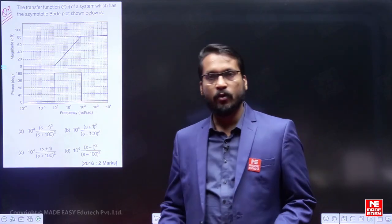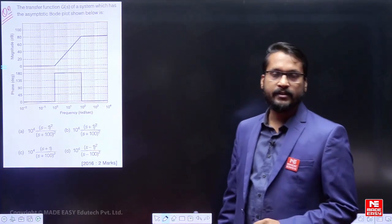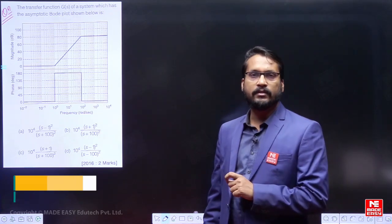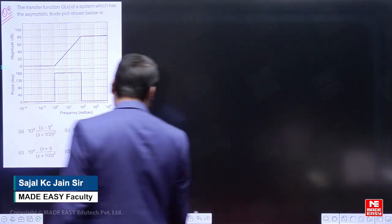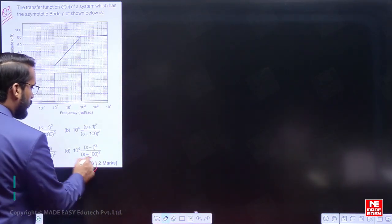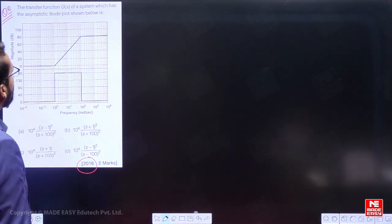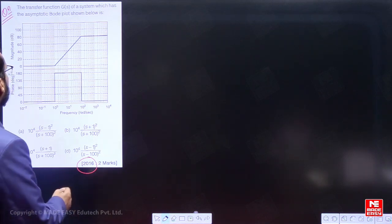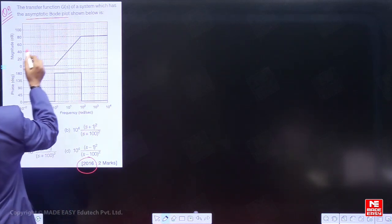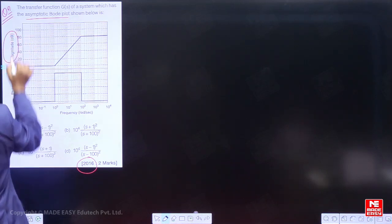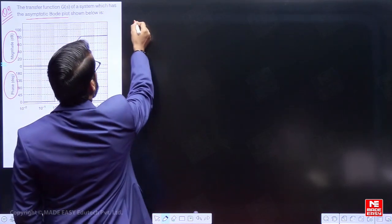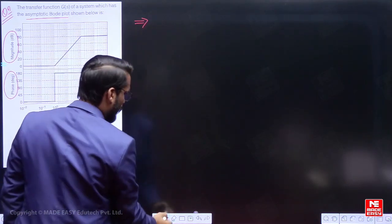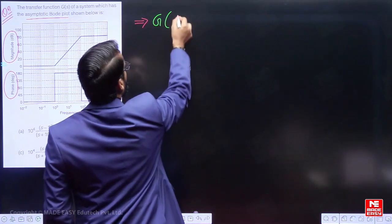Hello, dear students. I welcome you all in this series by Made Easy. Let us discuss the next previous year question which was asked in the year 2016. The transfer function G(s) of the system has the asymptotic Bode plot — the examiner has given the Bode magnitude plot and the phase in degrees. So, what can be the transfer function?